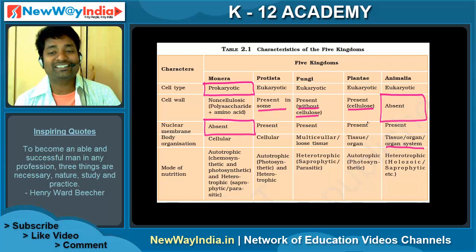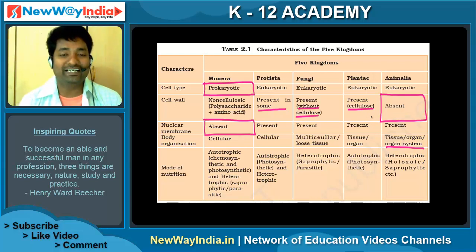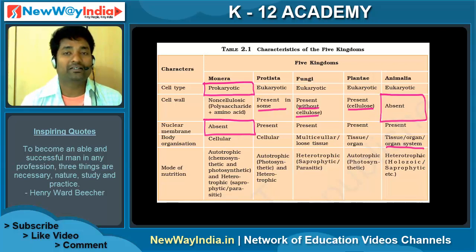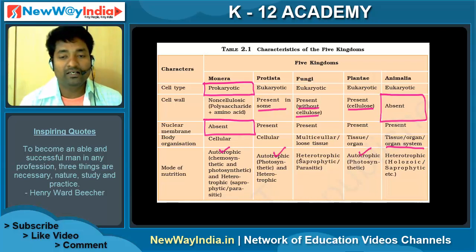For mode of nutrition: Monera is generally autotrophic; Protista is autotrophic or heterotrophic; Fungi is heterotrophic; Plantae is autotrophic; and Animalia is heterotrophic. So Monera, Protista, and Plantae can be autotrophic, while Fungi and Animalia are heterotrophic.